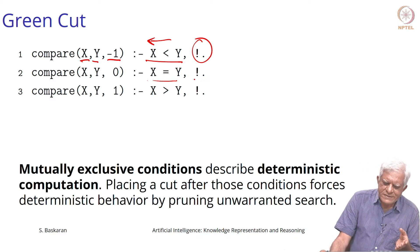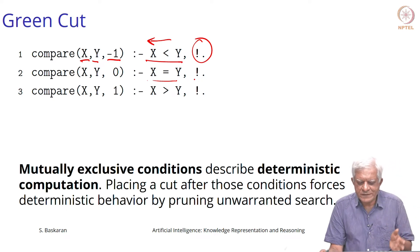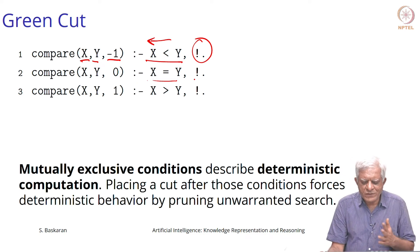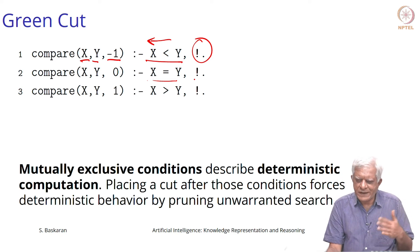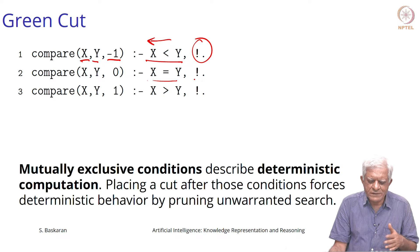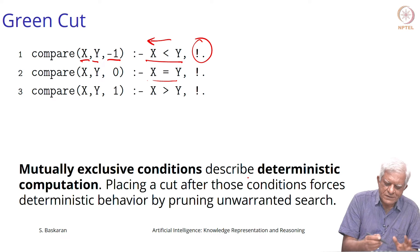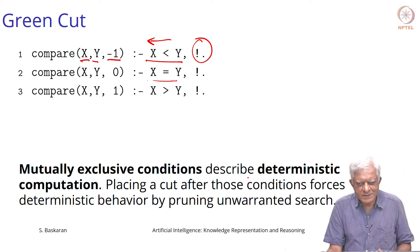When you are comparing these two numbers there can be only one of these three options — you can never have two answers. So this cut is not really changing the meaning of the program. You will always return minus 1, 0, or 1 depending on whether x is less than, equal to, or greater than y, and there is not going to be any change in the way Prolog behaves because you have added a cut. The only effect of cut will be that you will not try the other useless computations. Once you have got one answer, cut says do not look for other answers. Under such mutually exclusive conditions which describe deterministic computation, Prolog behavior does not change using a cut, and such cuts are called green cuts, which means they do not change the meaning of the program.